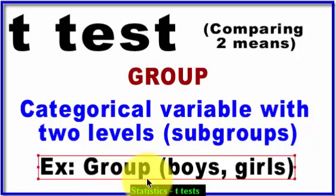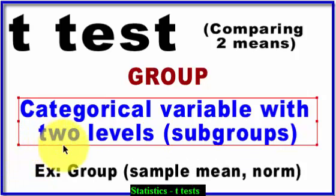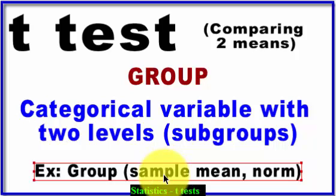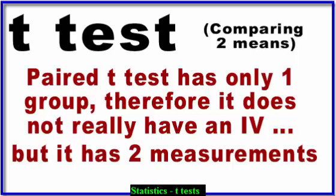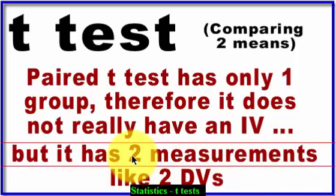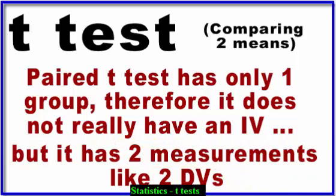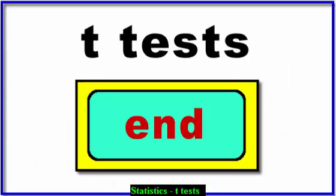For boys and girls who run faster, the IV is group and the levels are boys or girls. For the one-sample t-test, the two groups are sample and population. The weird one is the paired t-test — it only has one group, so it really doesn't have an IV. It has two separate measurements, and you treat those two measurements like DVs. That explains everything about the t-test for now. All we've got to do is learn how to do them and interpret them. That's it.